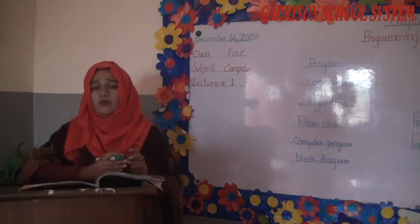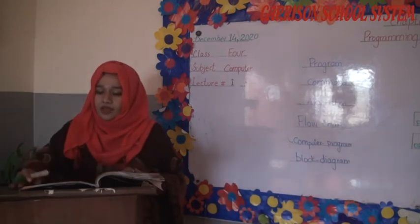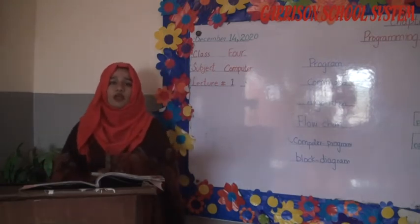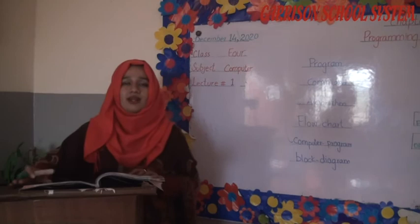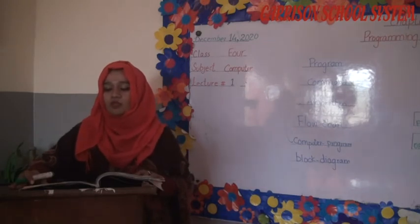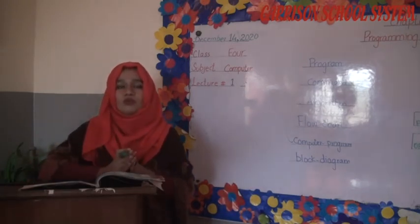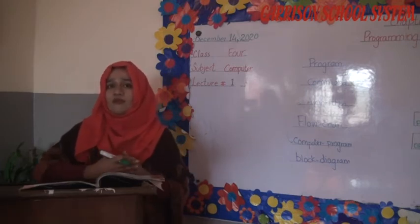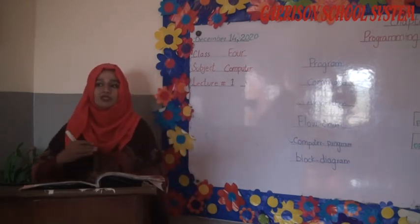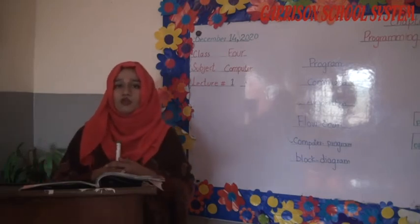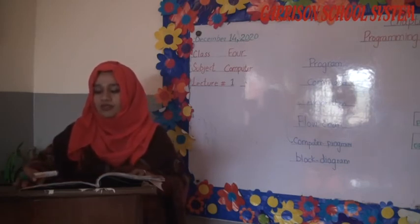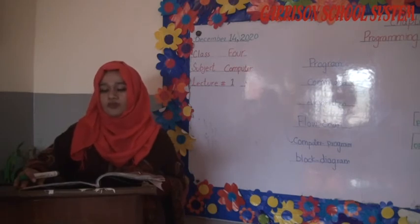Next topic: Programming Languages. Programming languages enable programmers to give instructions to the computer through commands that both the programmer and the computer understand. Different programming languages include Java, Fortran, Pascal, and C++. They are programming languages that can do specific tasks on the computer. In all programming languages, the programmer must follow specific rules.